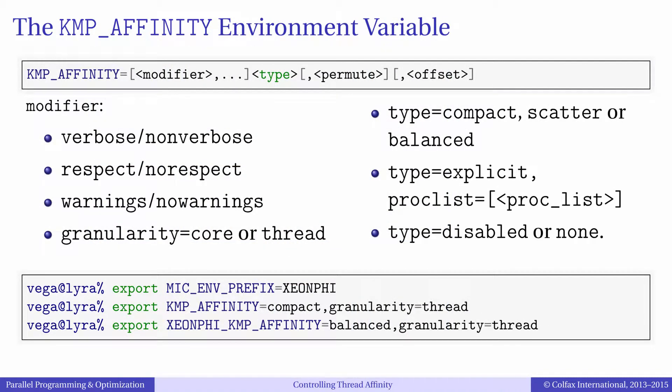Affinity patterns may be modified by setting the numerical parameters PERMUTE and OFFSET. PERMUTE changes the order in which levels are enumerated in the hierarchical structure of processors — packages or sockets, cores, and logical processors or hyperthreads. OFFSET allows beginning the pattern, compact or scatter, from a core other than zero. The different types of affinity work for different types of applications, and we will discuss that in a minute.